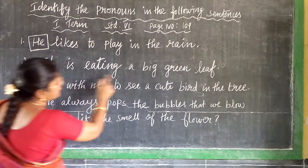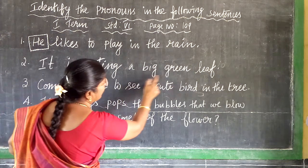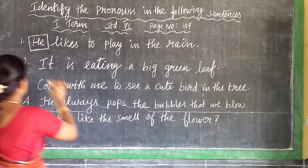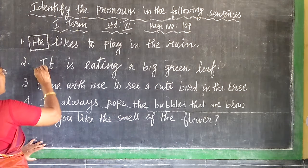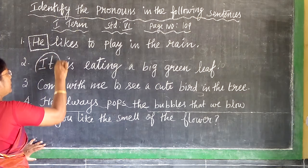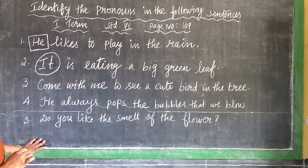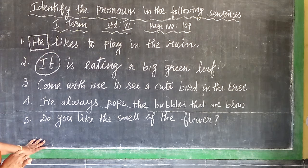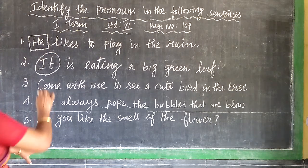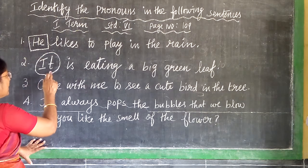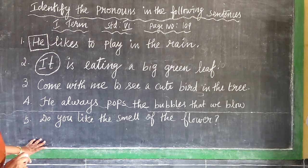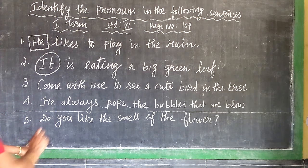It is eating a big green leaf. So, it means 'awan.' The word it is a pronoun. It means 'awan.' Next.